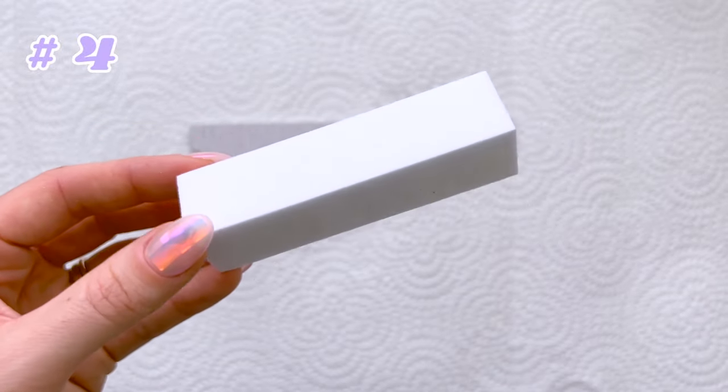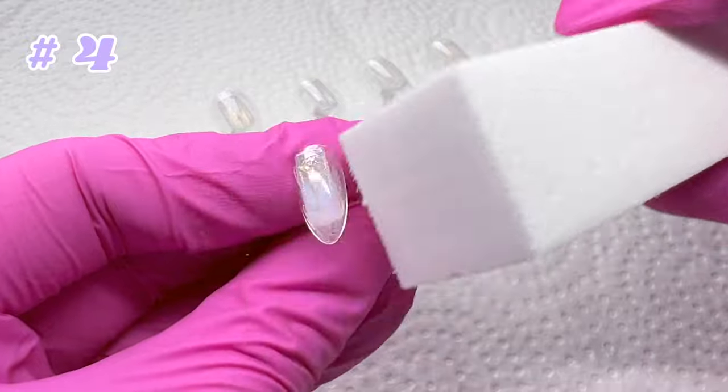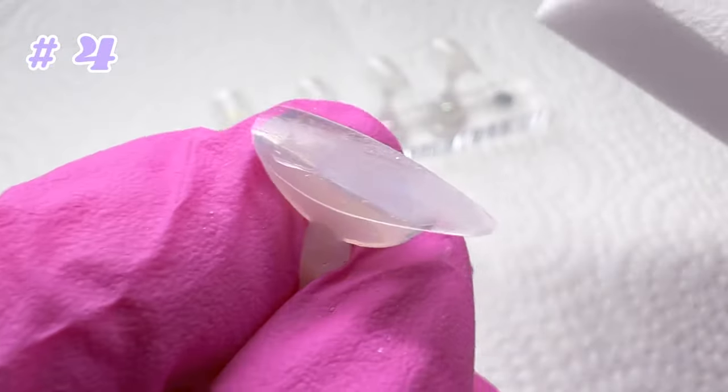Similarly, I also prep the nails by buffing them with a buffing block, or more recently, chemically etching them. Buffers are also useful for creating a matte base for chrome or for art.